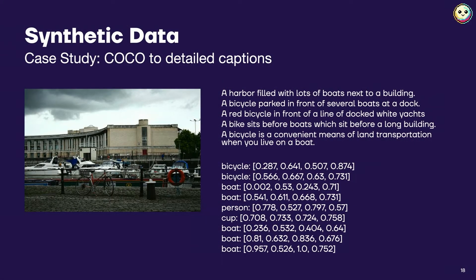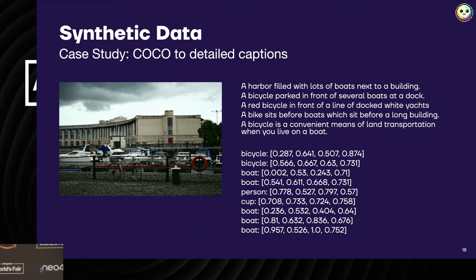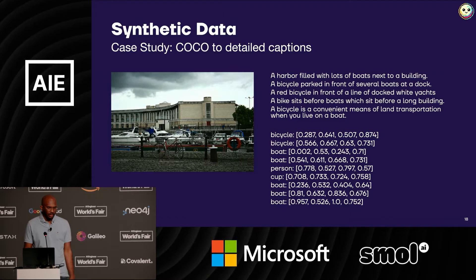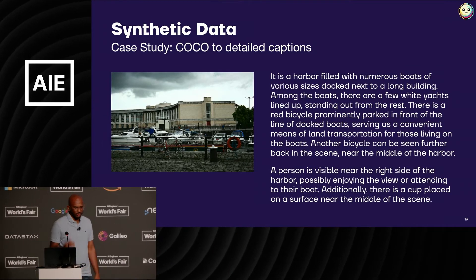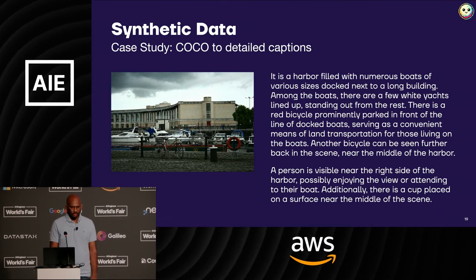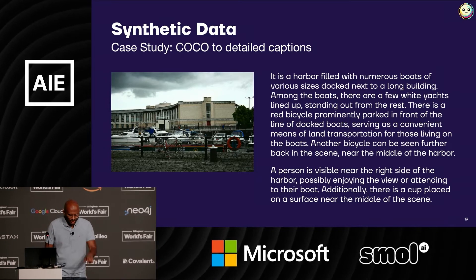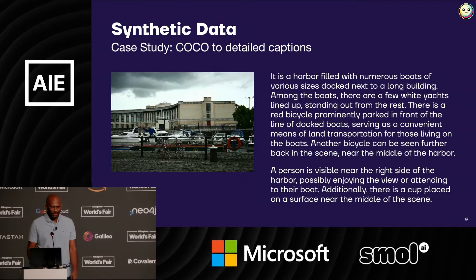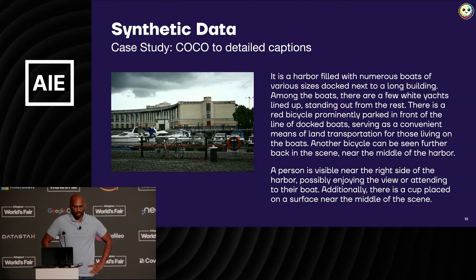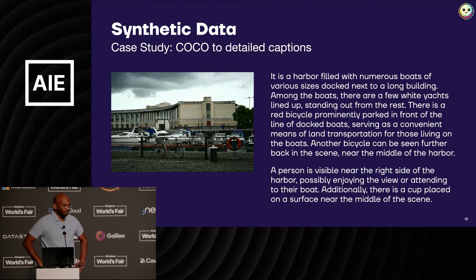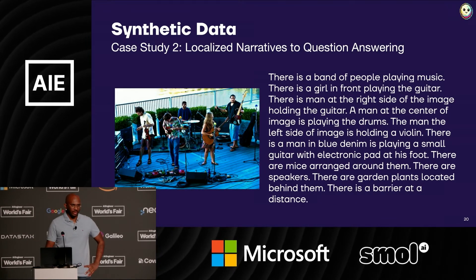Here's an example of how not to do it. COCO is a dataset — it has around 200k images, each with five short descriptions and a bunch of object annotations like 'there's a bicycle at these coordinates.' Let's say you want to take those short descriptions and object annotations and generate more detailed captions that include the union of all the information. If you just naively call GPT-4 with this information, it generates text that hallucinates — it says there's a person near the right side of the harbor when there are maybe five pixels there that may be a post. It may be a person — we don't really know. That's because the object annotations were bad. The model is also taking a lot of creative liberties, like saying there are five yachts standing out from the rest. So you need to do a little more preprocessing of your data before you feed it to the model.